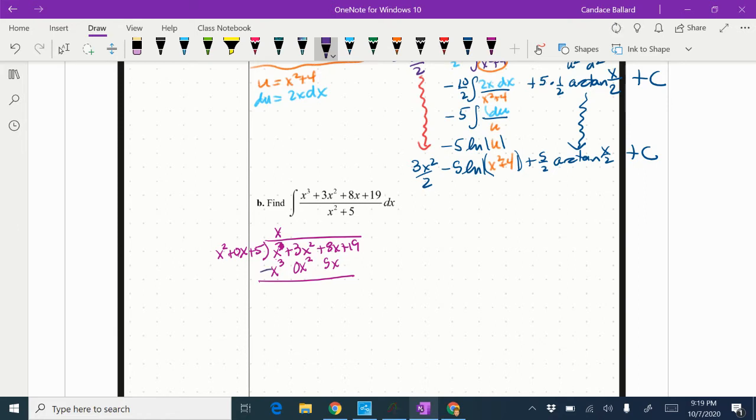Now we are going to distribute a negative. And I'm going to go ahead and subtract. So x cubed minus x cubed is 0. 3x squared minus 0x squared is 3x squared. 8x minus 5x is 3x. And I'm going to drop the 19.